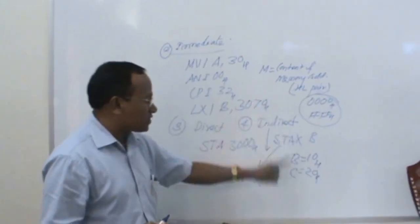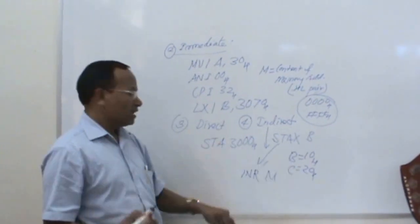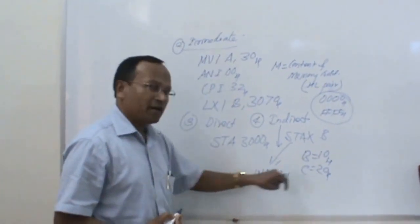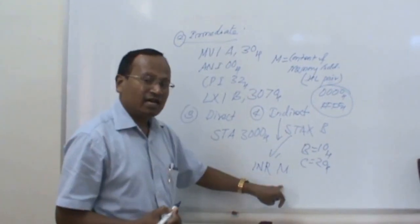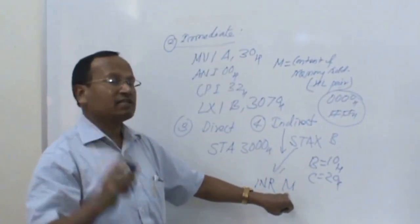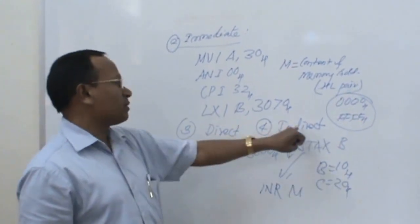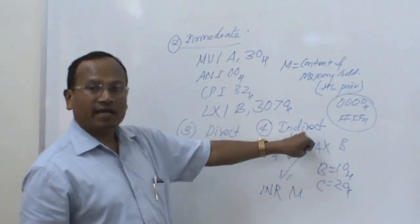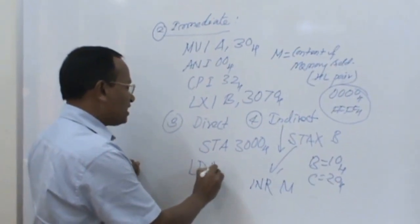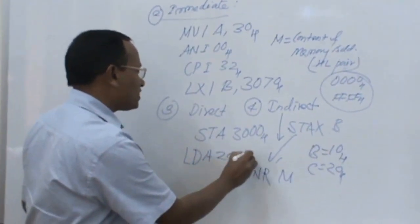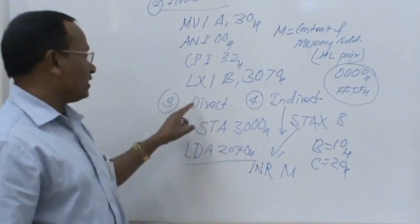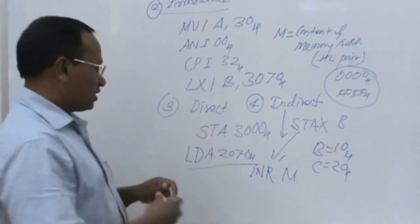In all instructions — whether it is MOV M A, DCR M, or any instruction where capital M is present — all those instructions come under indirect addressing mode. For direct addressing mode, an example is LDA 2070H, which is also considered under direct addressing mode.